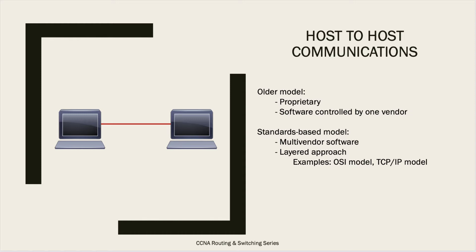There are two types of models used for host-to-host communication. One is called the old model, which many people also call the proprietary model. As the name implies, the software is controlled by one vendor. If you use another vendor, there's no guarantee the endpoint can communicate because that software is controlled by one vendor, and another vendor might not implement the same software. That's where the standard-based model came into existence.